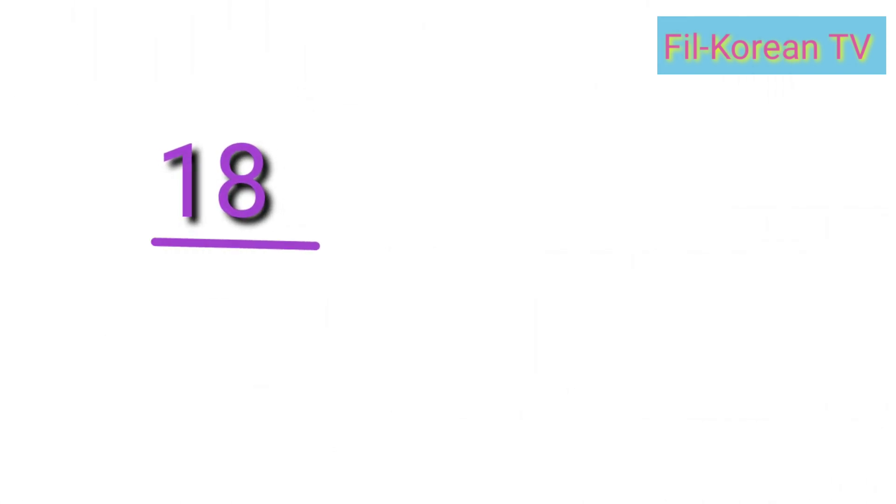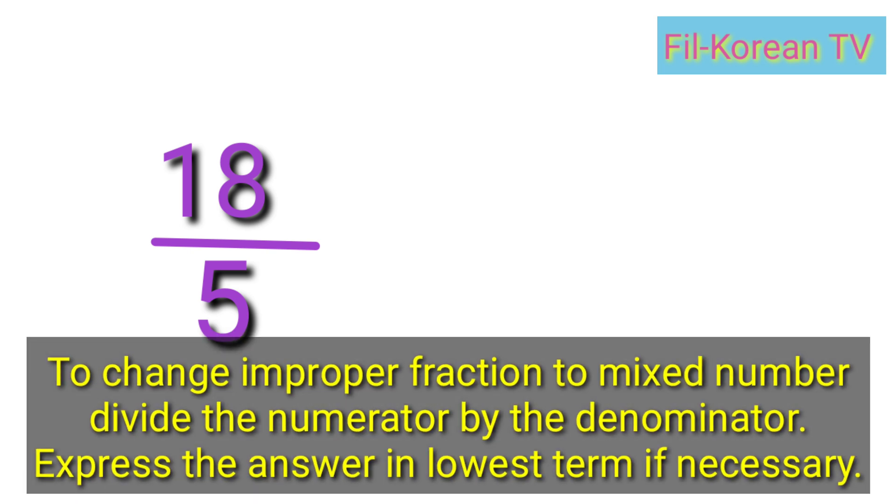This time, we will proceed in changing improper fractions to mixed number. Let's take this example: eighteen-fifths. To change improper fraction to mixed number, divide the numerator by the denominator. Express the answer in lowest term if necessary.